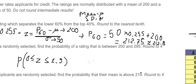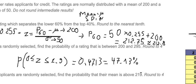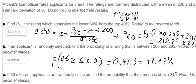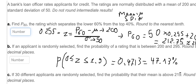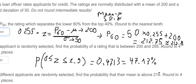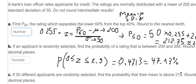Looking at the table, for z = 1.90 we have 0.4713. Since the question asks to round to four decimal places, the answer is 0.4713.